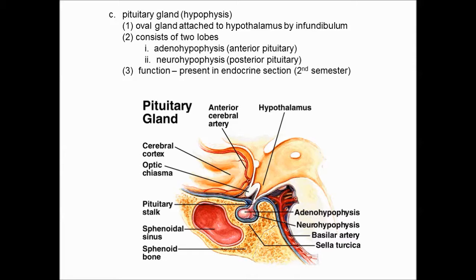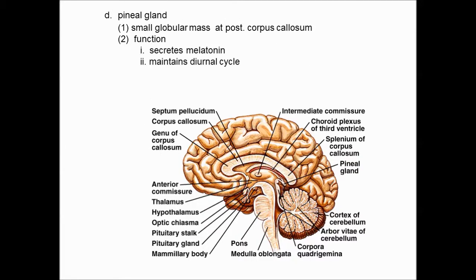There's another gland in the brain just inferior to the posterior end of the corpus callosum — right here is the pineal gland. It's a small globular mass, and its function is endocrine: to produce the hormone melatonin. It's photosensitive in nature and we now think it plays a big role in our diurnal rhythm, regulating 24-hour rhythms such as the sleep-wake cycle and release of cortisol. We'll discuss that more in second semester.